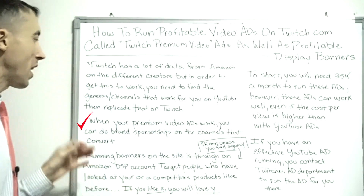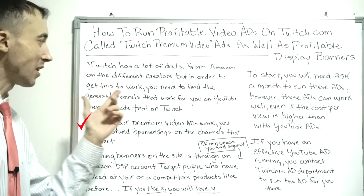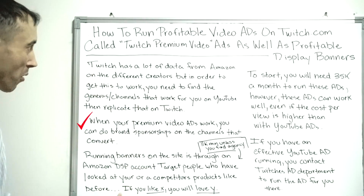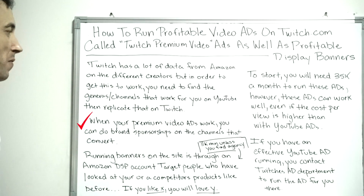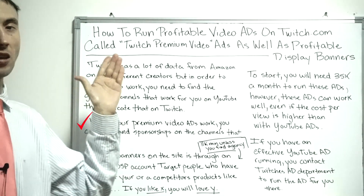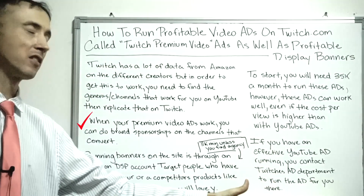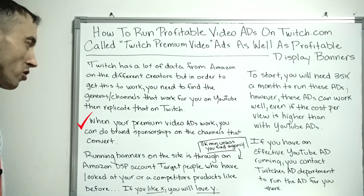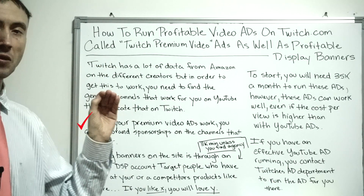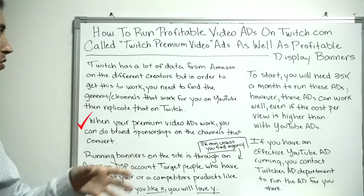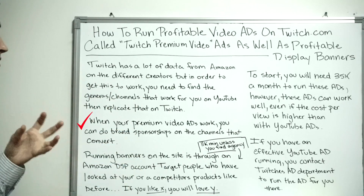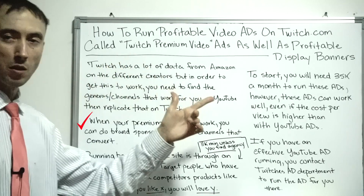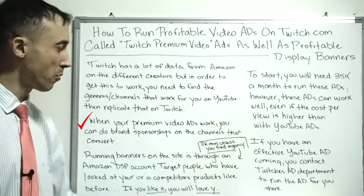With all that said, that's basically what you want to do: start out with Twitch premium video ads if you're getting strong success on YouTube, then move over to sponsorships on the specific channels that work once you start doing video ads on Twitch. Now as far as the banner ads go...